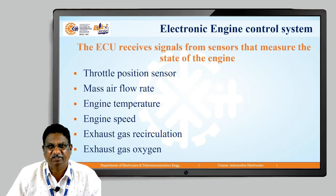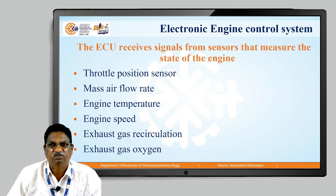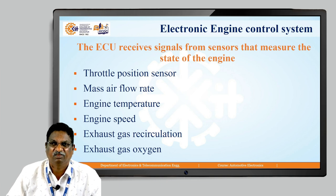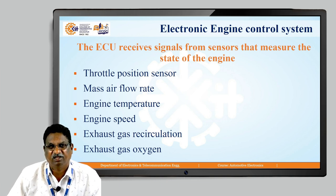The ECU receives signals from sensors that measure the state of the engine. Different sensors are used to monitor the engine status. Those sensors are: throttle position sensor, which senses the position of the throttle plate; mass air flow sensor, which measures the mass of airflow; engine temperature sensor, which measures the temperature of the engine; engine speed; exhaust gas recirculation; and exhaust gas oxygen sensor. These are the sensors used for measuring these parameters.